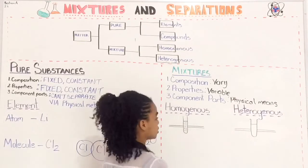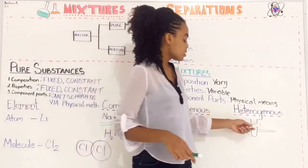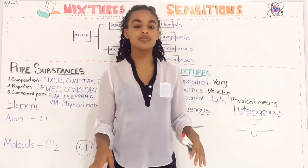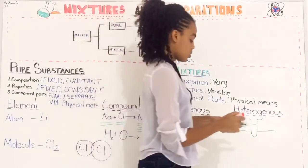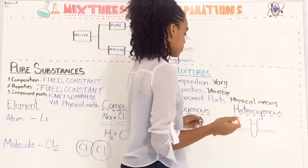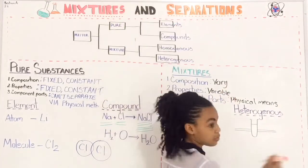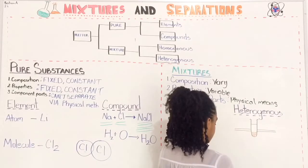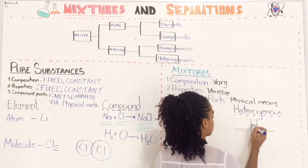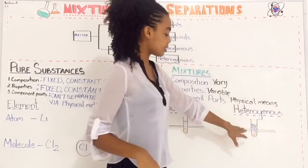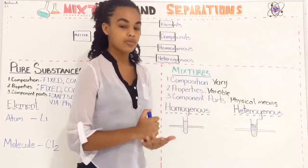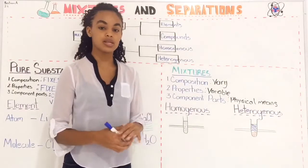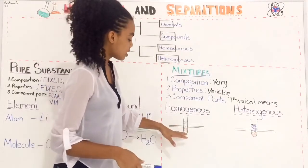In a heterogeneous mixture, the particles are not evenly distributed throughout. For example, if you put sand in water, the sand settles at the bottom and the water sits at the top — they're separated. So in a heterogeneous mixture you can see the difference between the two components, such as the sand and the water. In a homogeneous mixture you are unable to differentiate the components because they're evenly distributed throughout.